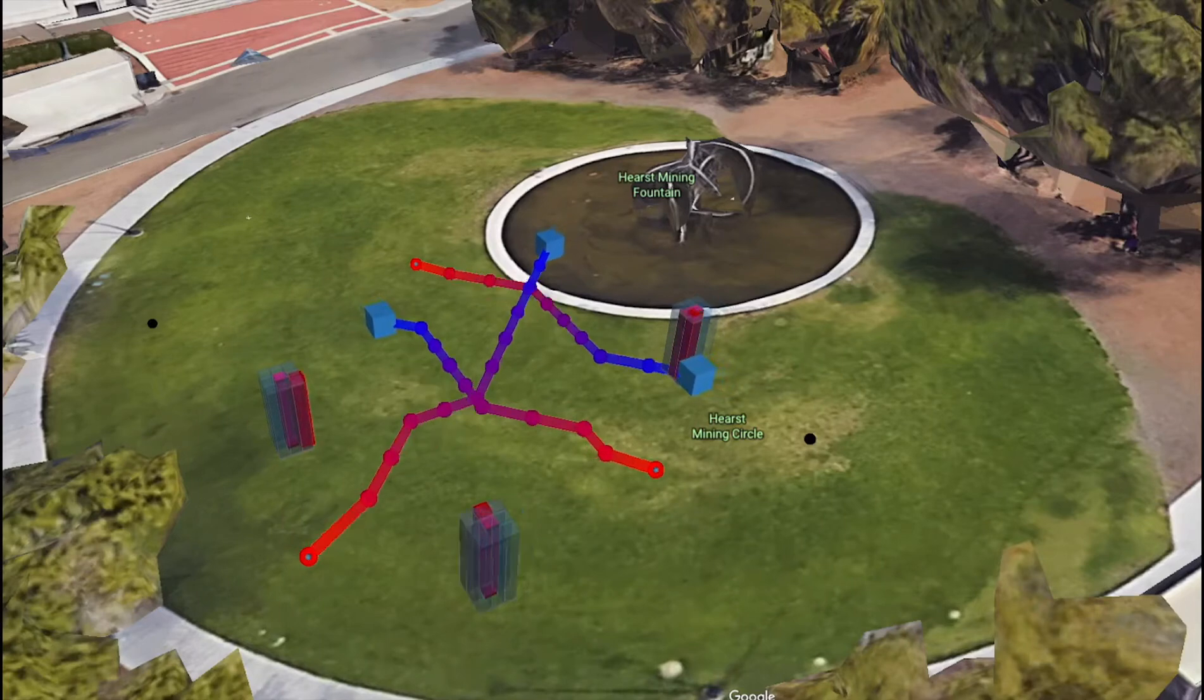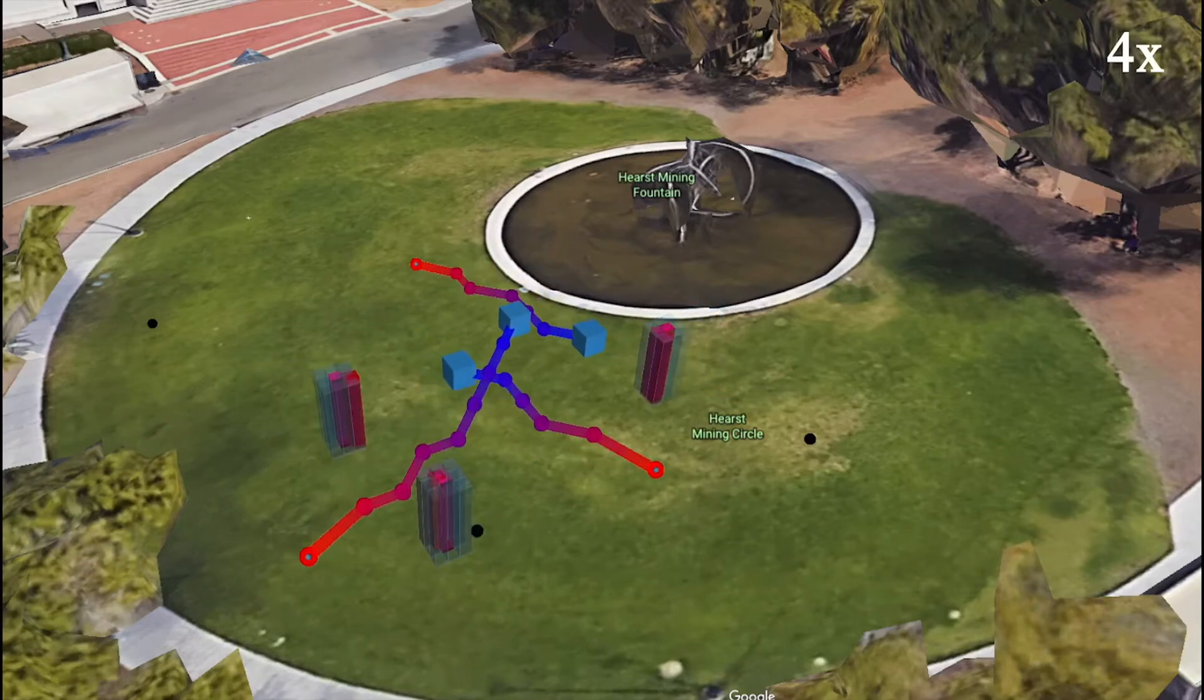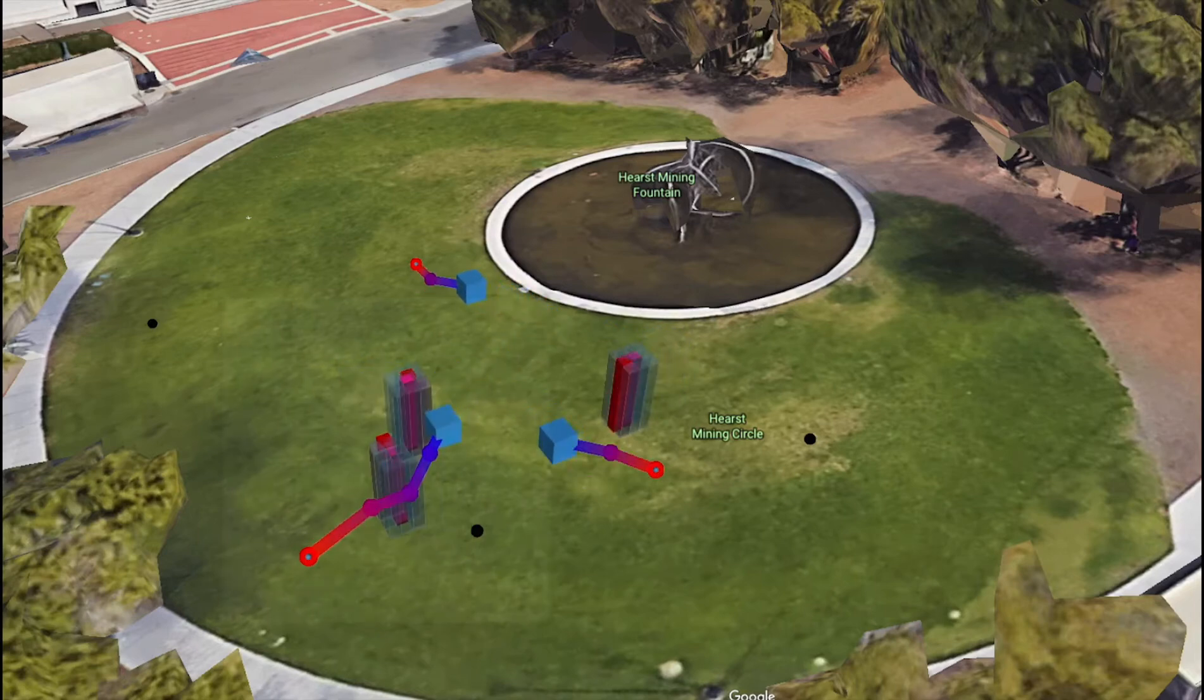In this simulation, we highlight our framework's performance in close proximity interactions. As we speed up the playback, watch how the robots consistently re-plan to remain collision-free.